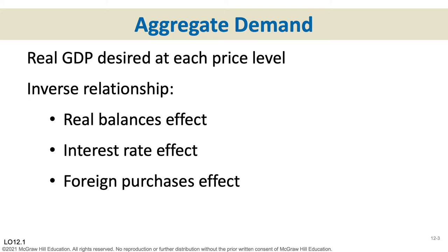Another reason is the interest rate effect. Think about big purchases like houses, cars, or refrigerators — things you might have to finance. We want interest rates to be low when we borrow so we don't have to pay as much back. On the aggregate demand curve, the price level here refers to the price of borrowing money. When that price is high, we don't borrow as much and GDP equilibrium is at a lower level. As interest rates go down, people borrow more for those big purchases.